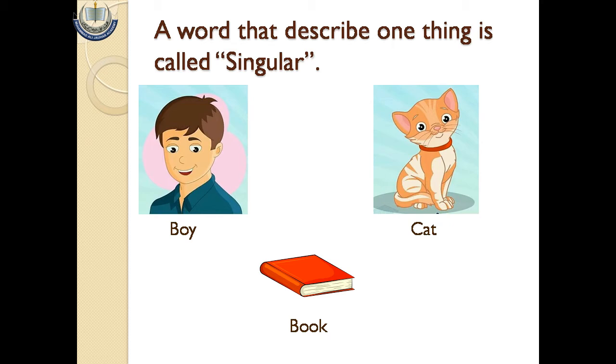Aise alfaaz jo aik cheez ko zahir karein, singular kehlate hain. Singular ko hum Urdu mein wahid kehte hain. For example: a boy, a cat, a book.